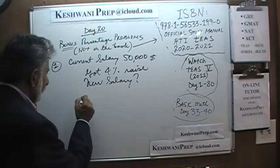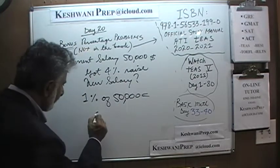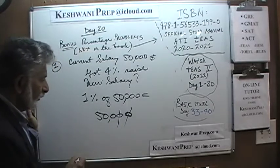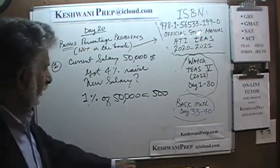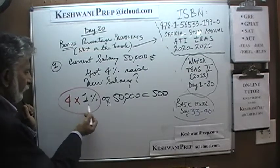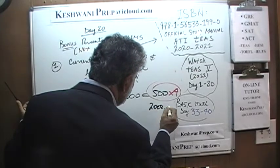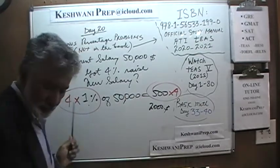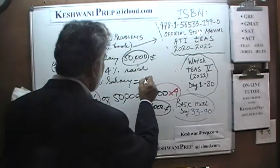Let's find out. We know that 1% of 50,000 — if you want to find 1% of anything, you just drop two zeros. If you want to find 10%, you knock out one zero; if you want to find 1%, you knock out two zeros. So 1% of 50,000 is 500. If 1% is 500 and we are interested in 4%, just multiply both sides by 4. So 4% is 500 times 4, which is $2,000. We got $2,000 in raise. Therefore our new salary is simply $50,000 plus $2,000 — a grand total of $52,000.